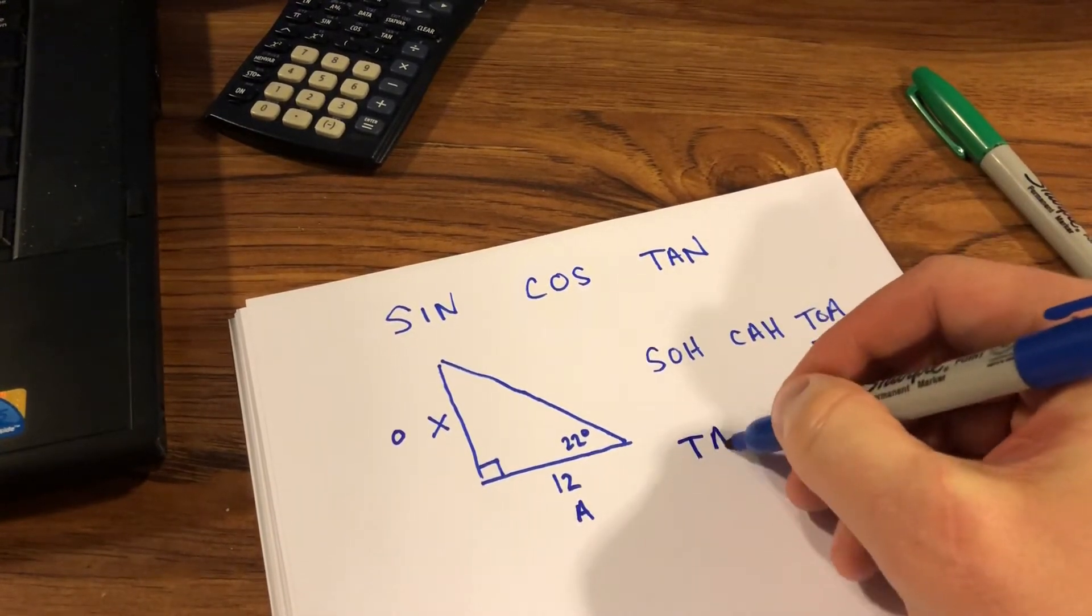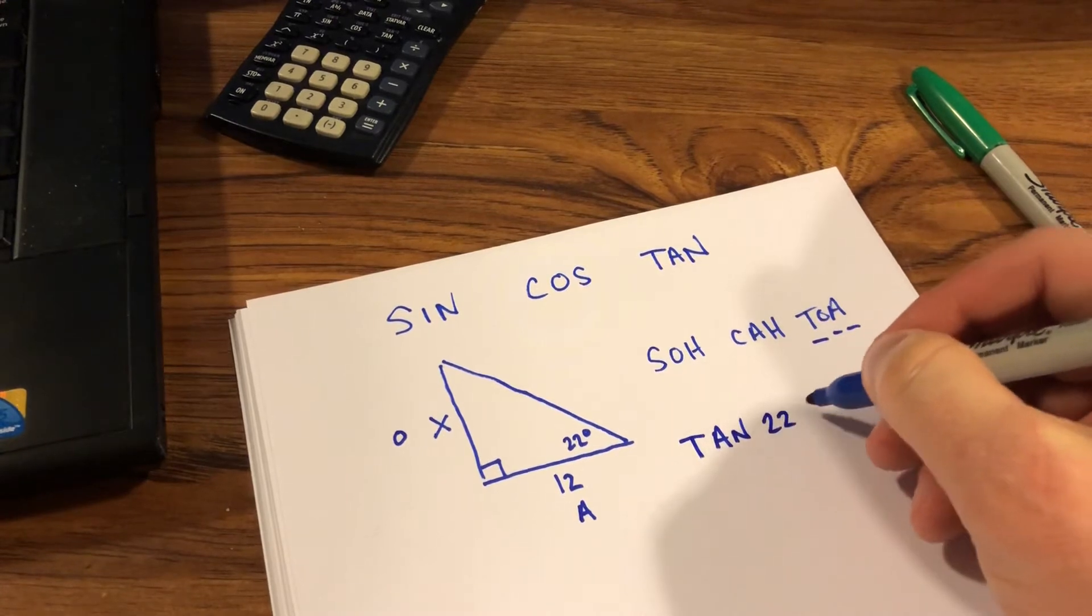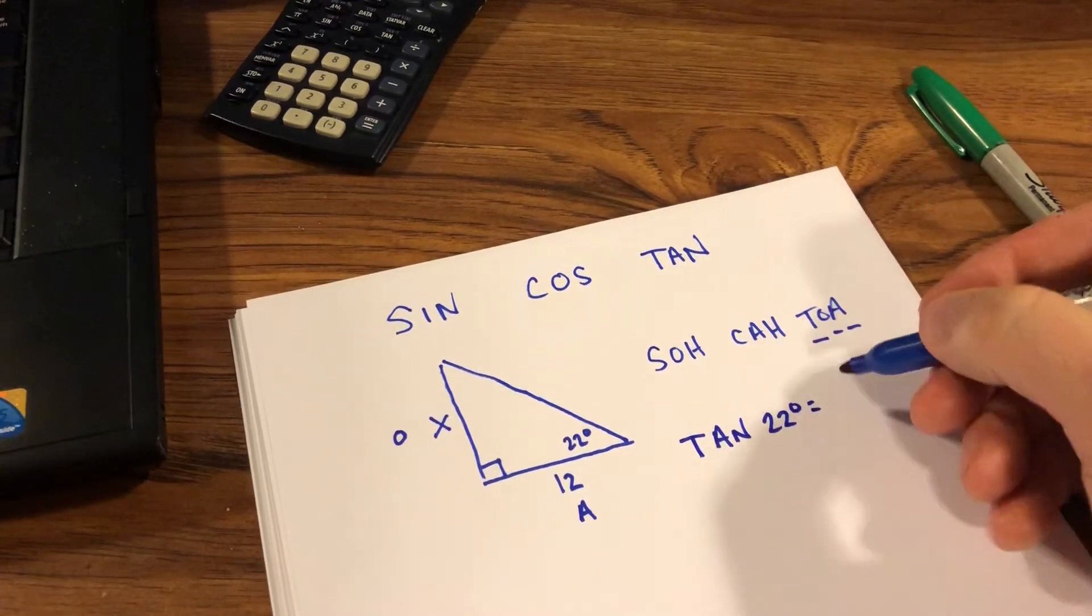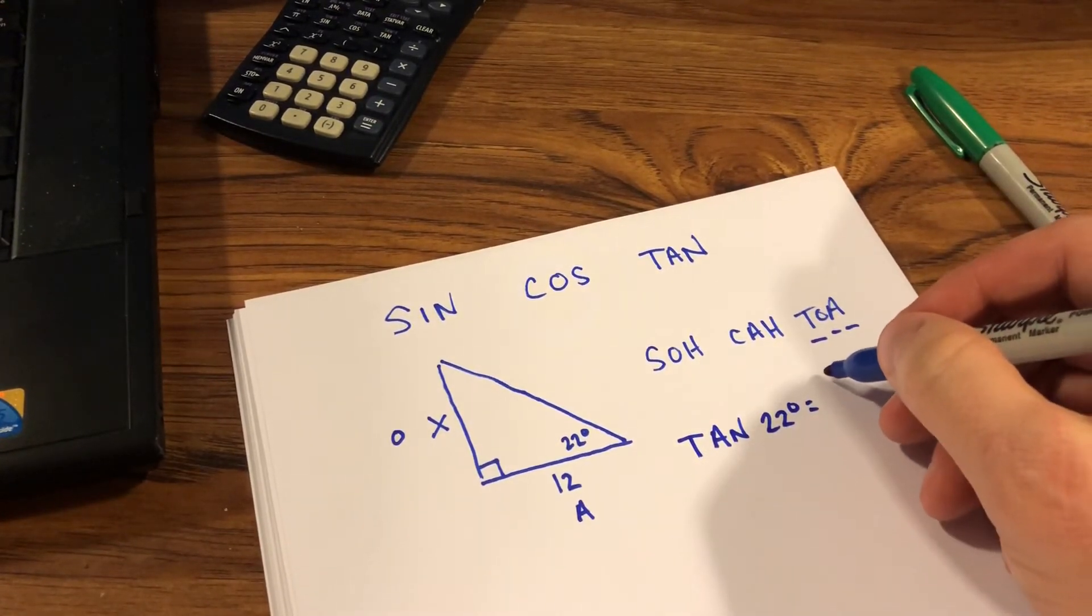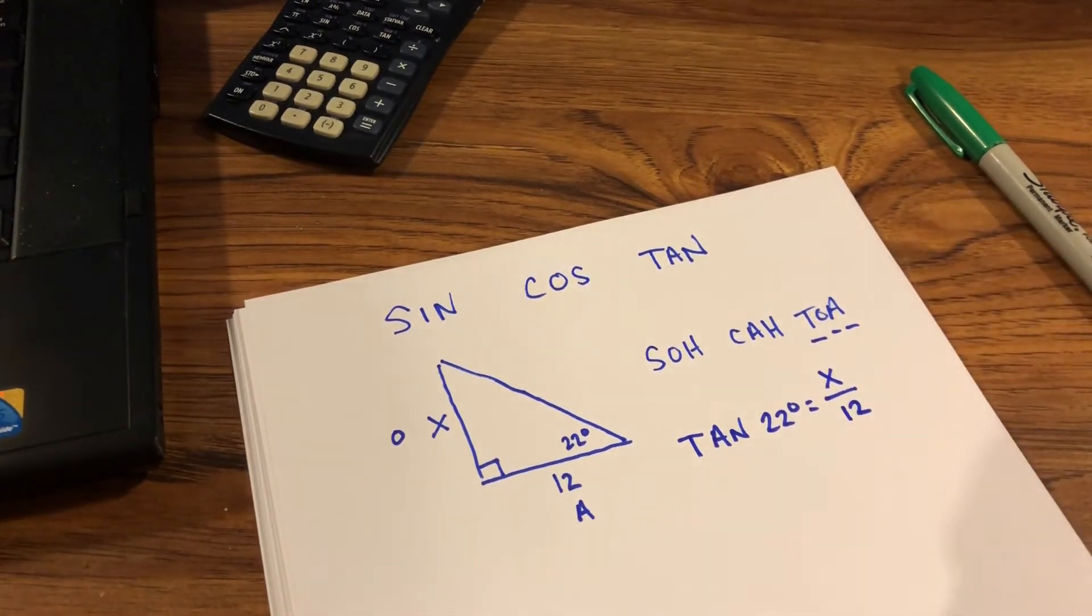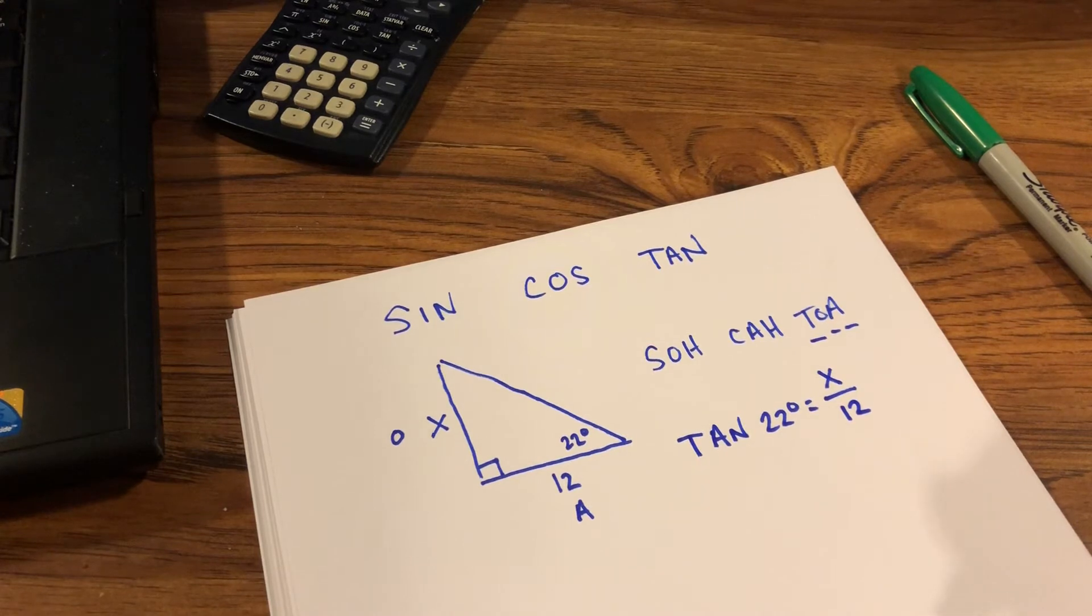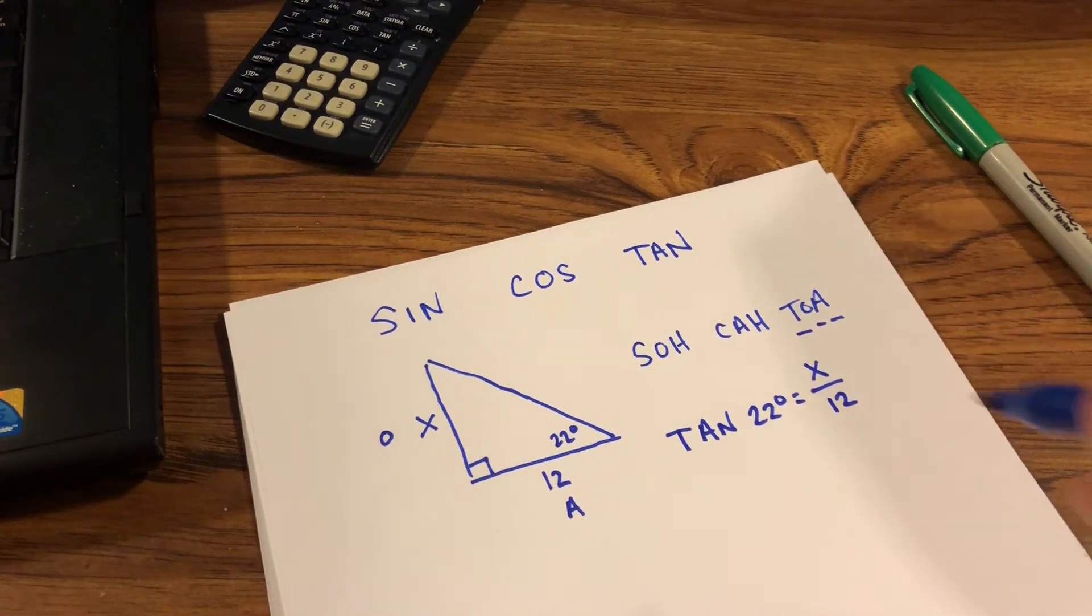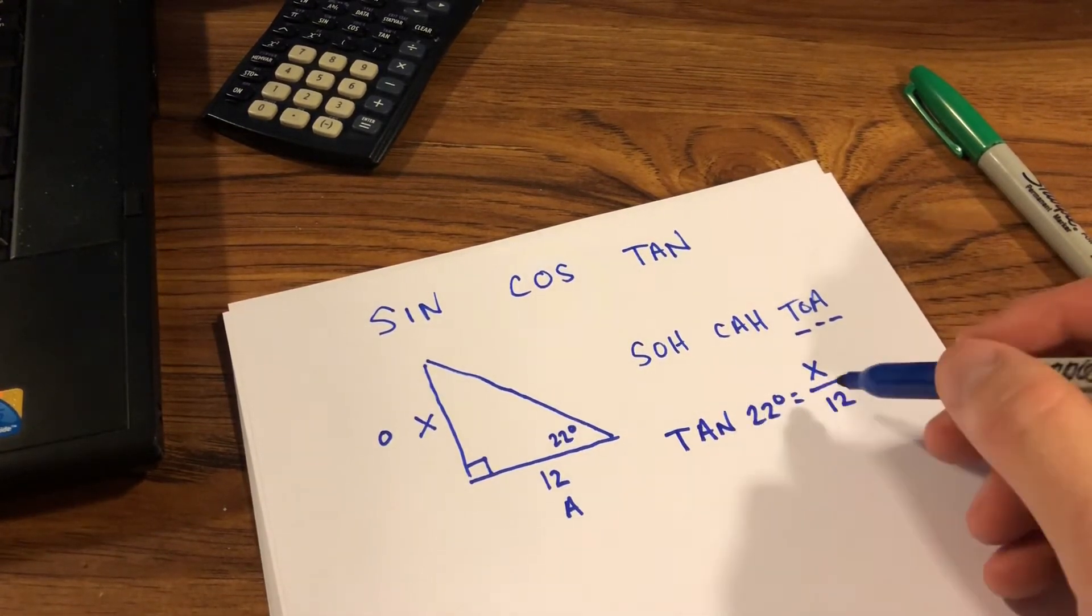So therefore, in this problem I'm going to use the tangent of 22 degrees and set that equal to the opposite, which is x, over 12. As a result, in order to solve for this, x is going to be equal to the tangent of 22 times 12.